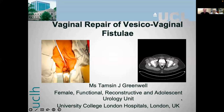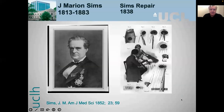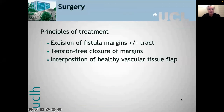The first successful vaginal repair of the vesicovaginal fistula — indeed the first successful repair ever — was in 1838, reported by the American gynaecologist J. Marion Sims. The principles of treatment remain the same today: excision of the fistula margin with or without the tract, tension-free closure, and interposition of healthy tissue.